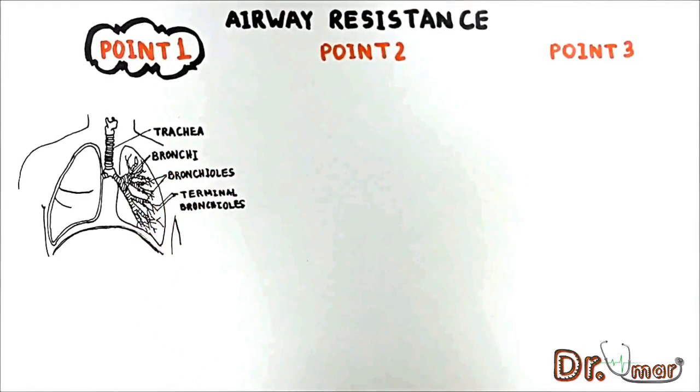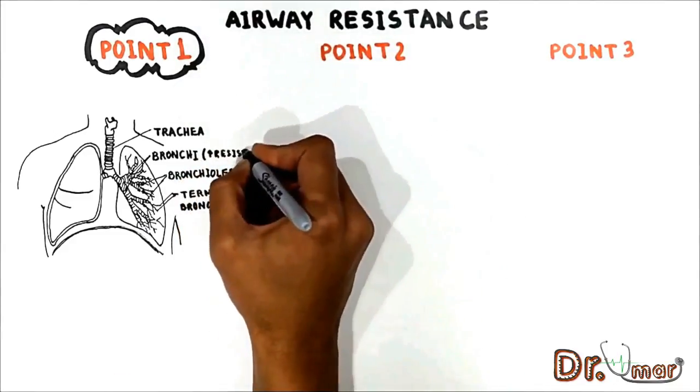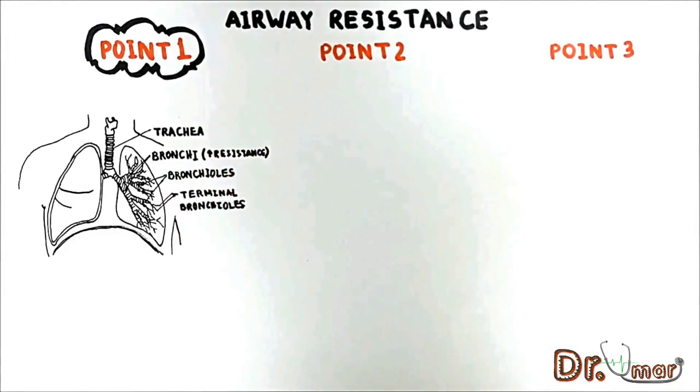The larger airways represent most of the resistance. The peak resistance is in the first and second bronchi. Moving downward, the bronchioles are very low resistance airways.